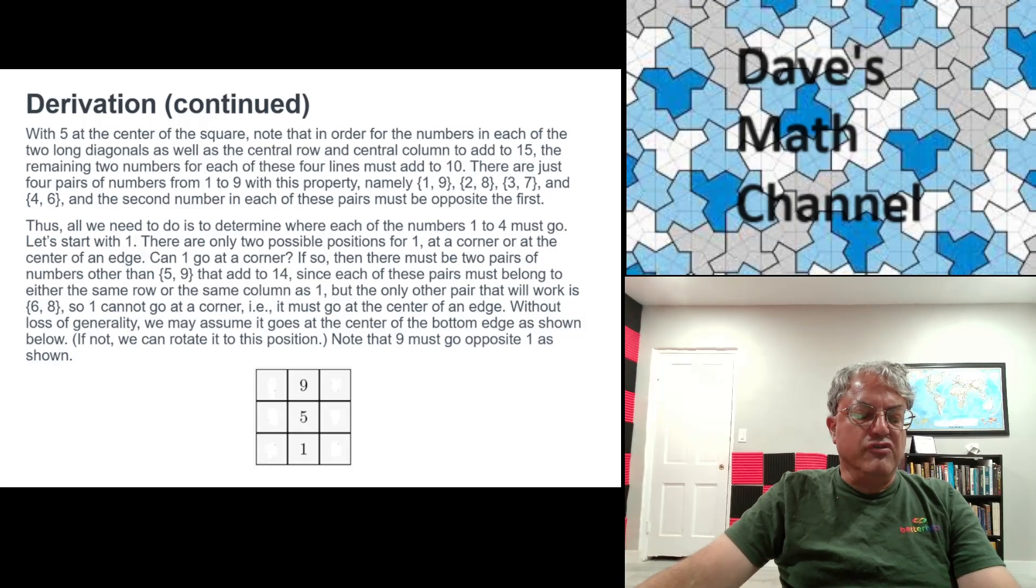It has to belong to both the diagonal, the long diagonal with 5, and it also has to belong to the top row in the left column. But that's not going to work because that means there have to be two other pairs of numbers besides 5 and 9 that add up to 14. There's only one other one, that's 6 and 8. You can't duplicate the numbers. You can't have 7 twice. So the only place one could go, the corner won't work.